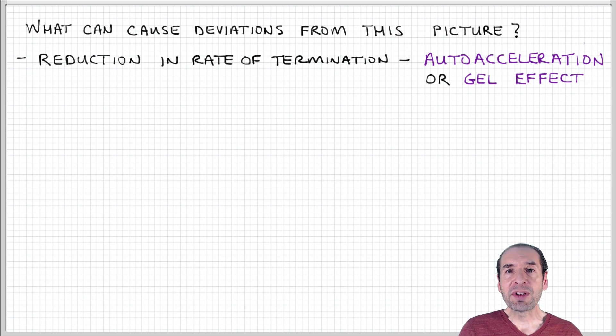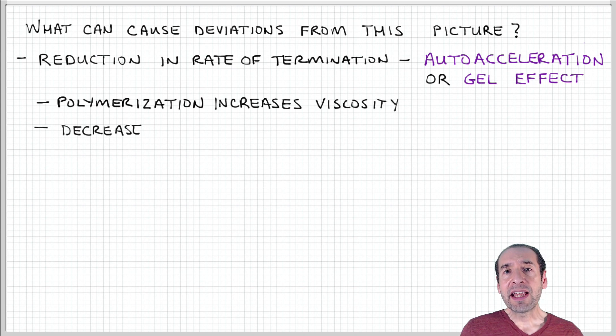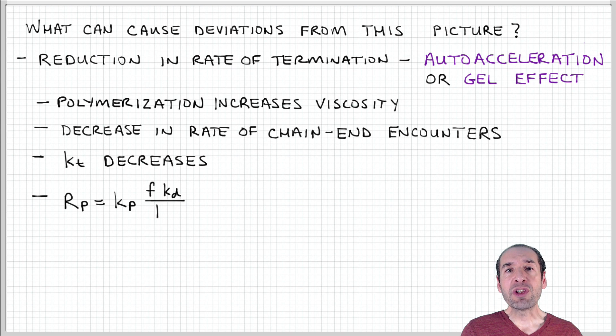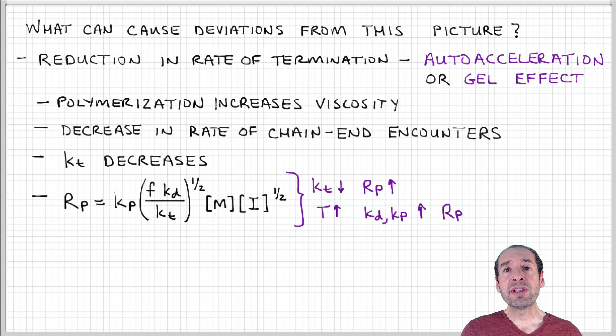This is a reasonable assumption in many cases, but there are some circumstances where this starts to break down and lead to some unusual phenomena. One of them is called autoacceleration or the gel effect. What can happen is that if very high molecular weight polymer is formed, then that can cause the nature of the reaction mixture to become very viscous and gooey. This can reduce the probability of encounters that would cause a termination process to happen.